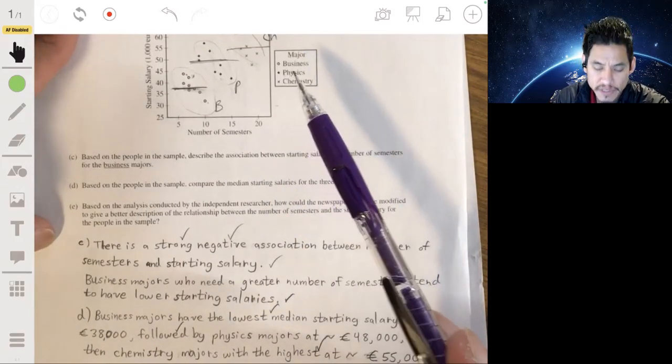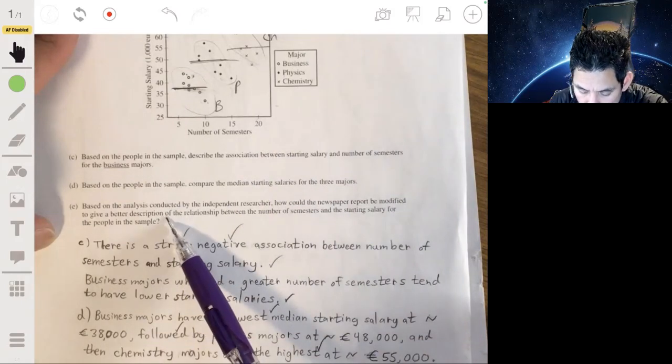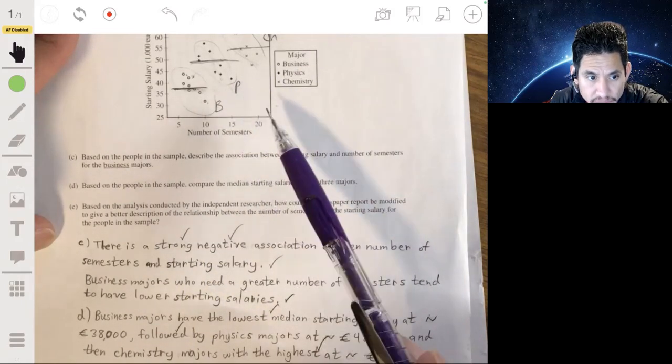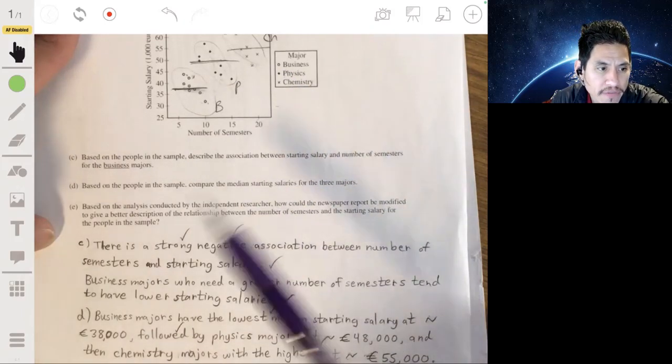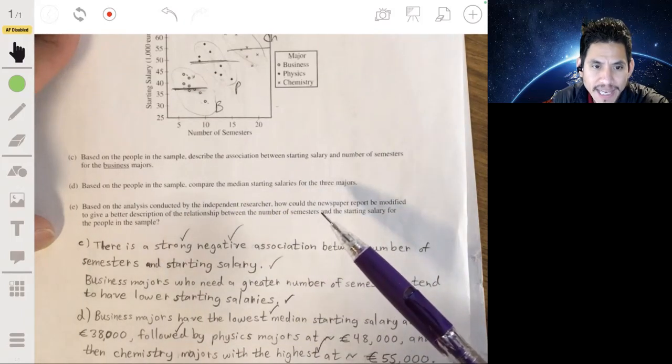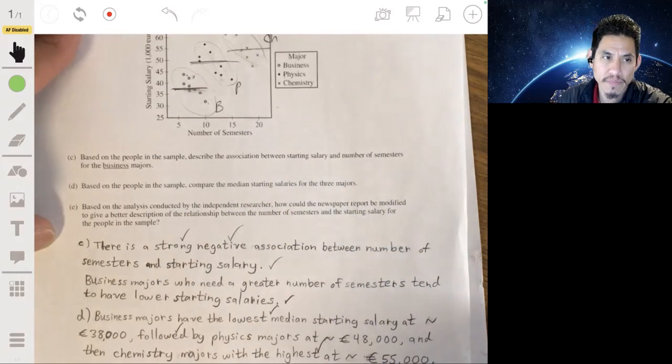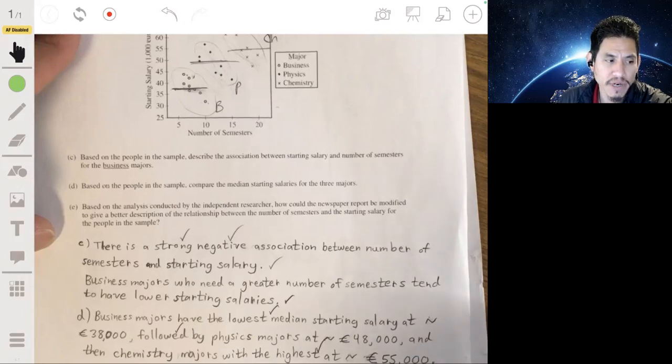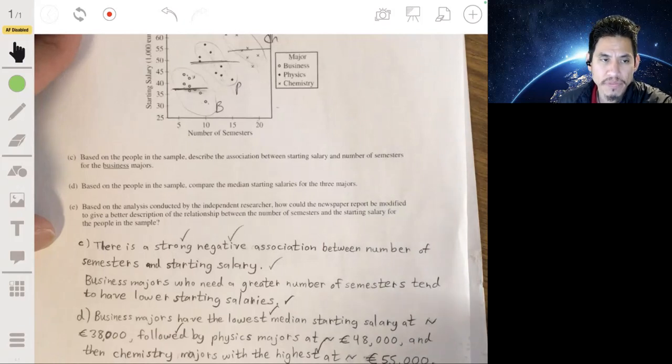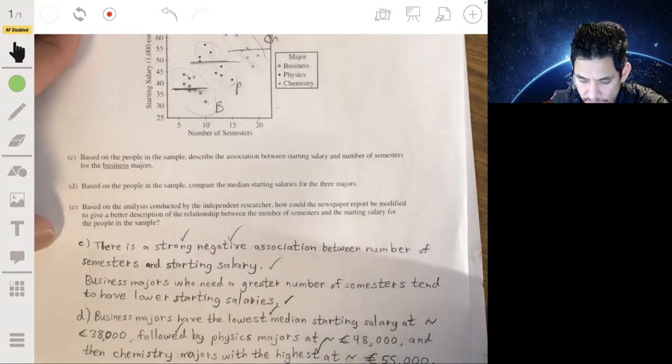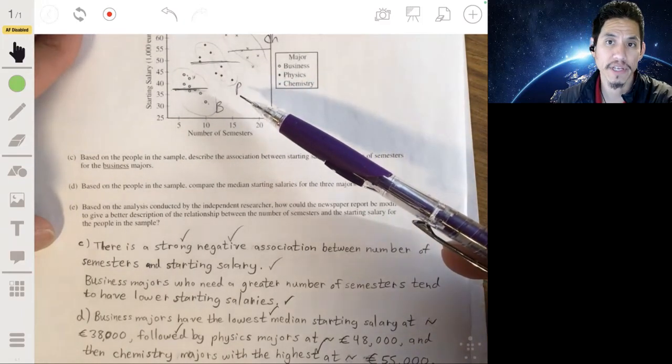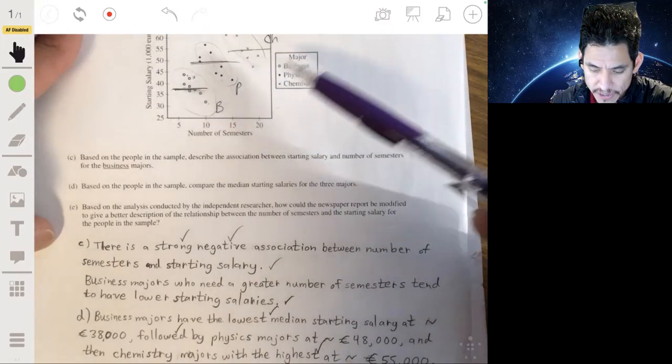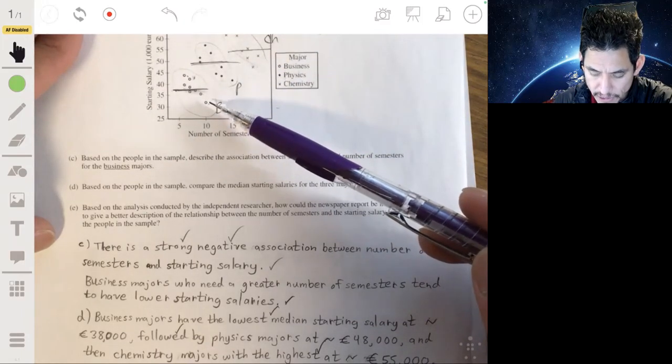Now, so based on this graph, based on we have some more detailed information about the scatterplot. How could the newspaper report be modified to get a better description of the relationship between the number of semesters and the starting salary for the people in the sample. So again, with these problems always just think regular real life. Because it's always the best way to address stats. Cause that's what it is. You know, studying data in real life. And so what would be smart and not misleading would be to essentially make it clear to people looking at the data or reading this in the newspaper.